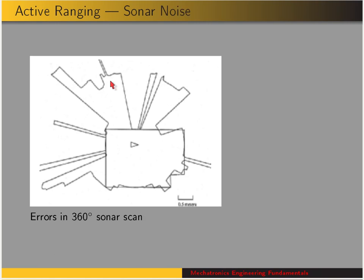One big problem with sonar sensors is reflection — specifically whenever the signal is reflected away from the sensor. You want it reflected back, but sometimes it's reflected away, and that depends on the surface and the angle between the sensor and surface. For example, this is a scan at 360 degrees for a robot located in a room. These lines show the detected distances to objects, so you can see that detection works well in some places, but in others nothing's detected. At certain angles, all the emitted wave is reflected away from the sensor, and so nothing is detected in that range.